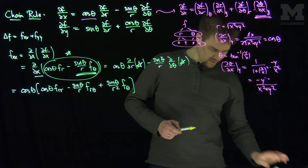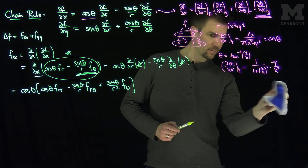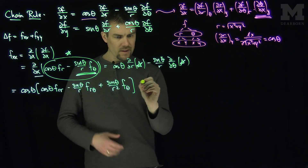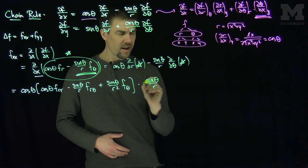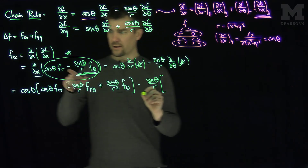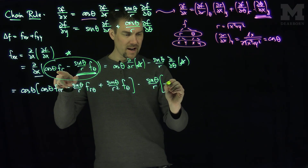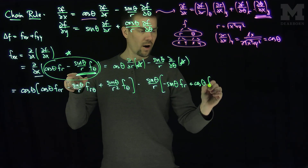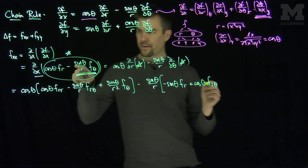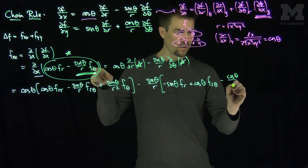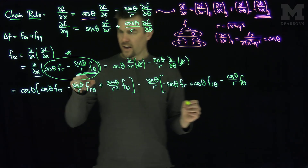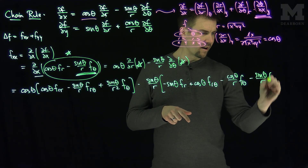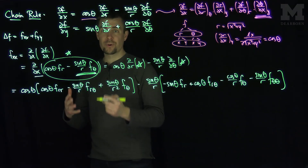Now taking the θ-derivative of star and multiplying by −sinθ/r: the θ-derivative of cosθ·fr gives −sinθ·fr + cosθ·frθ. The θ-derivative of −(sinθ/r)·fθ gives −(cosθ/r)·fθ − (sinθ/r)·fθθ. Multiplied by −sinθ/r, these complete the second x-derivative fxx with a whole collection of terms.